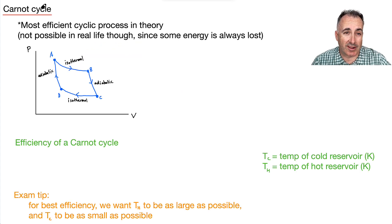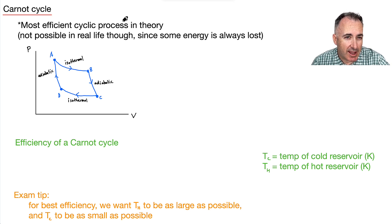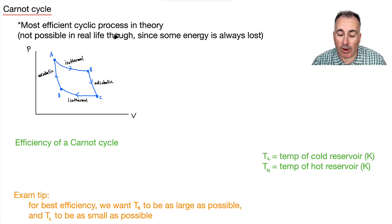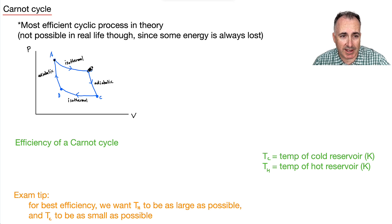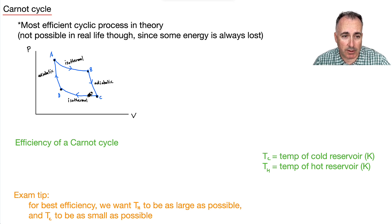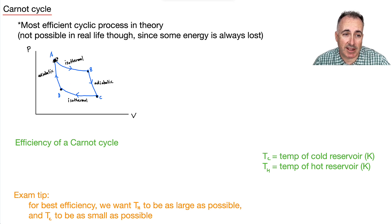Let's talk about a Carnot cycle. What is that? First of all, it's the most efficient cyclic process in theory. It's not entirely realistic, because there's always some energy lost and no 100% efficient heat engine exists. But this is the best you could do in theory. You start at A: from A to B it's an isothermal expansion, then an adiabatic expansion from B to C, then an isothermal compression from C to D, and finally an adiabatic compression from D back to A.